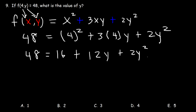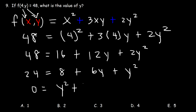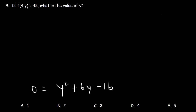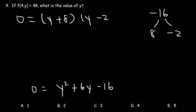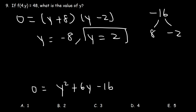We can divide everything by 2, because all the numbers are even. So half of 48 is 24, half of 16 is 8, half of 12 is 6, half of 2 is 1. Now let's subtract both sides by 24 and write it in standard form: y squared plus 6y, and 8 minus 24 is negative 16. Let's factor — two numbers that multiply to negative 16 but add to positive 6: that's 8 and negative 2. So this factors to y plus 8 times y minus 2. Therefore y is negative 8 or 2. 2 is the answer because that's the one listed, so B is the right answer.